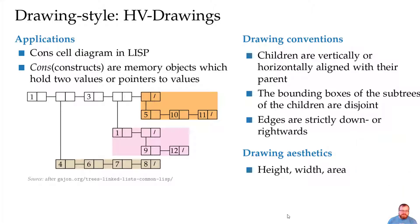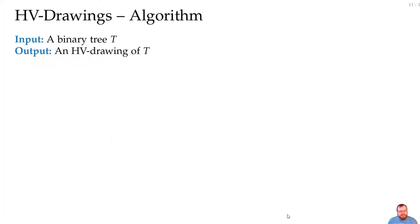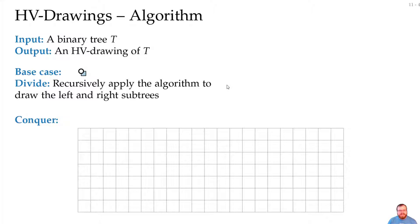To get HV drawings, we will again use a divide and conquer algorithm. As input, we get a binary tree, we produce an HV drawing. In the base case, we just have a single vertex and the bounding box is just the vertex itself. In the divide step, we recursively apply the algorithm to draw the left and right subtrees and in the conquer, we merge them.